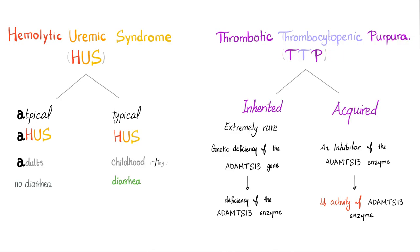TTP, on the other hand, can be inherited or acquired. In the inherited form, there is an absolute deficiency of ADAMTS13. However, in the acquired form, there is no deficiency of ADAMTS13 itself — instead, there is an inhibitor to ADAMTS13, usually an IgG antibody.